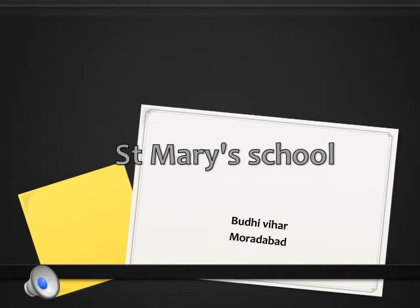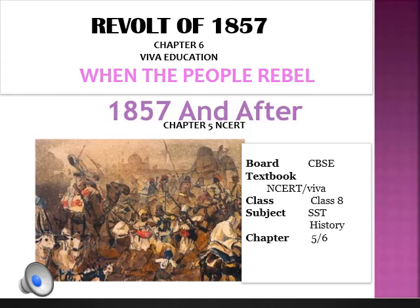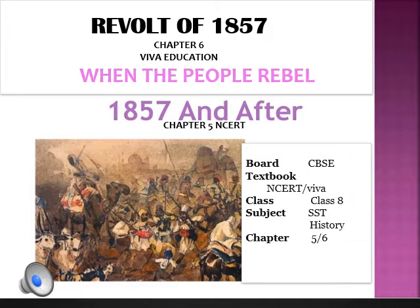Hello students, this is Taranum Jahan and I'm here to begin with a new chapter from your history. I hope you are able to understand the slides and answering all the questions given to you. We are going to take this chapter from both Viva Education and NCERT, as the contents are the same. In Viva Education this chapter is called 'Revolt of 1857' and in NCERT the title is 'When the People Rebel 1857 and After.' This is chapter 5 of your NCERT and chapter 6 of your Viva Education.